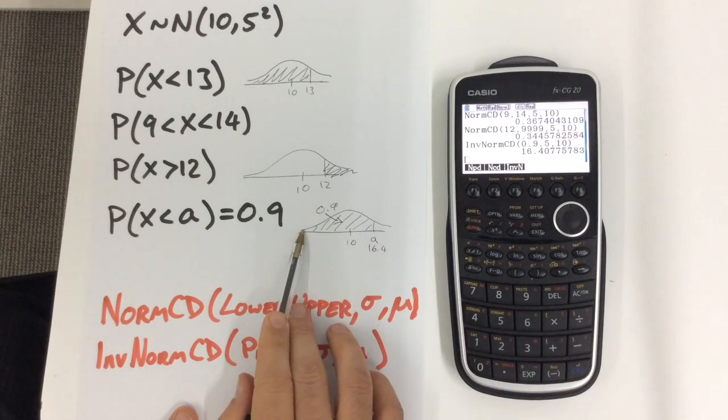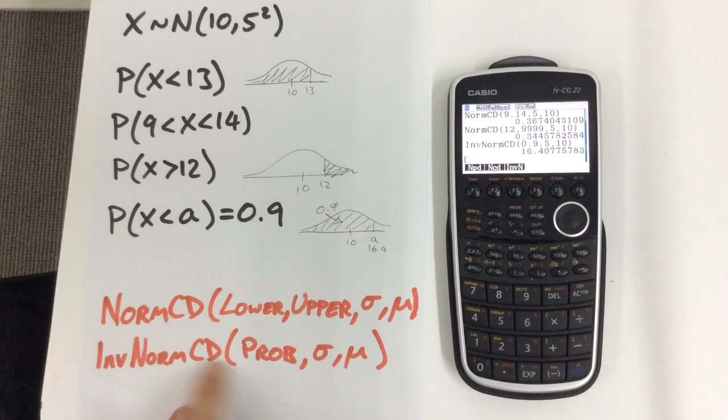And that tells us that this value here must be 16.4, so that the area less than that value is 0.9. It's all very simple as long as you remember these two rules: lower and upper bound, or probability, and make sure you get these round the right way, different from how we would normally present it.